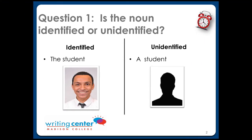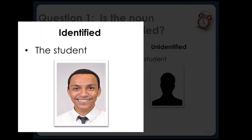The writer needs to begin by asking two questions. First, the writer needs to ask: is my noun identified or unidentified? The pictures on the slides help explain what we mean. So take a look at the image on the left. Use 'the' in front of a noun when you want to identify a specific person, place, or thing — like here, 'the student.'